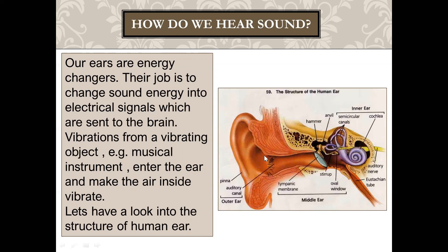To summarize: our human ear is composed of three parts. The outer ear includes the pinna and auditory canal. The middle ear has the tympanic membrane or eardrum and the three smallest bones — hammer, anvil, and stirrups — connected to the inner ear via the oval window. The inner ear has three semicircular canals and the cochlea, which sends signals through the auditory nerve to our brain.